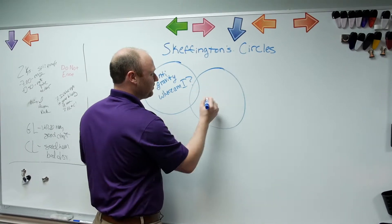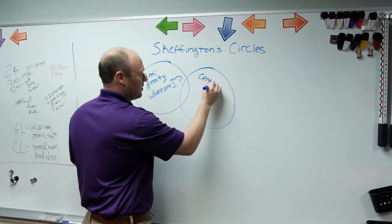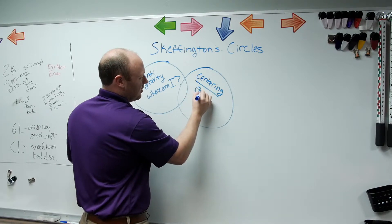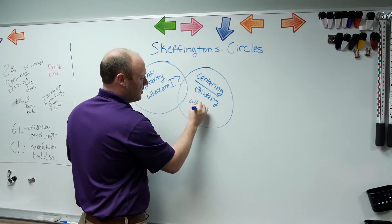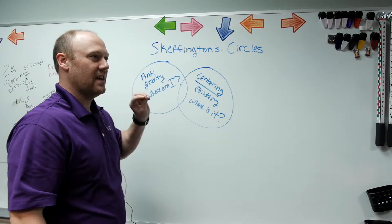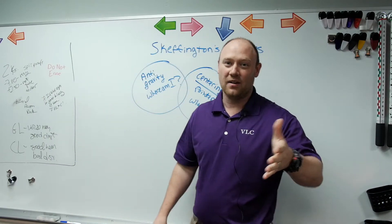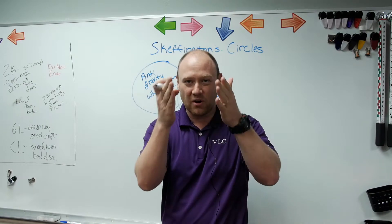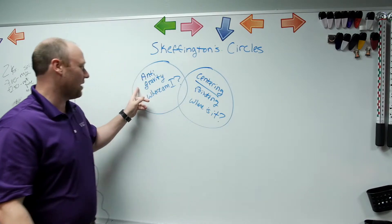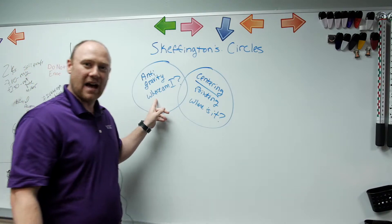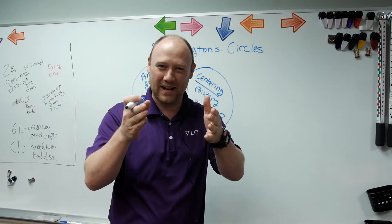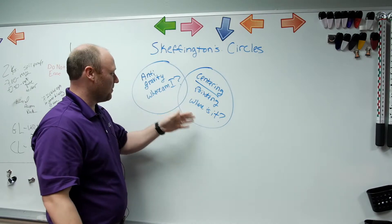The second circle is called centering, also called pointing, and it answers: where is it? This circle addresses directing vision. When I am looking at the camera right now, both of my eyes are pointing directly at the lens. The reason I know how to do that is because I understand through antigravity and body awareness where I am in space, and this allows me to point and direct my vision to different points of the room. So 'where is it' comes after 'where am I.'